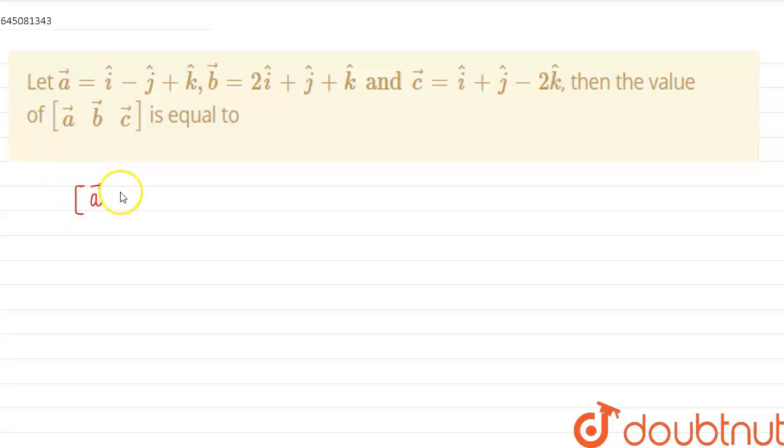Then the value of the scalar triple product of a, b, c is equal to... So see, the scalar triple product